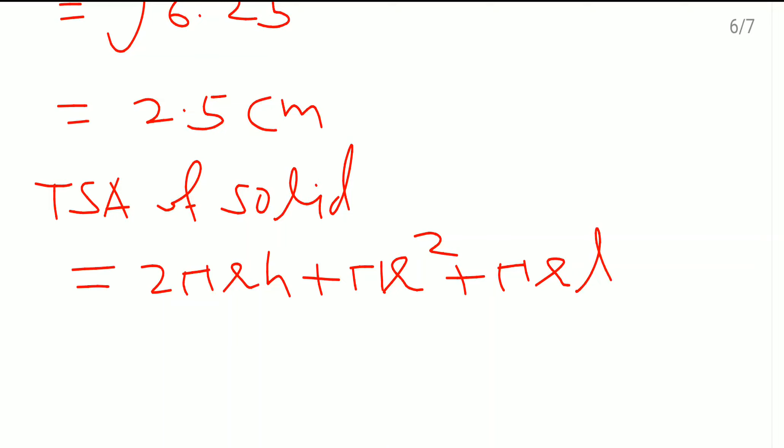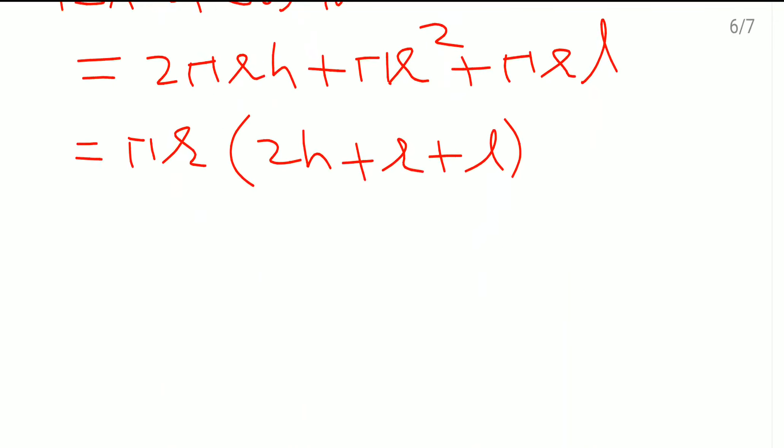Now see what can you take common? πr is there everywhere, so πr is out: 2h + r + l. Now we will substitute the values here. π means 22/7, radius it was 0.7. In the bracket, 2h, h was 2.4, plus radius, this is 0.7, slant height came as 2.5.